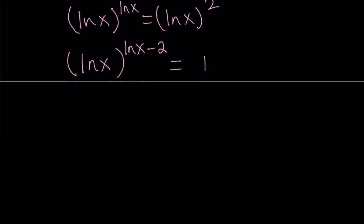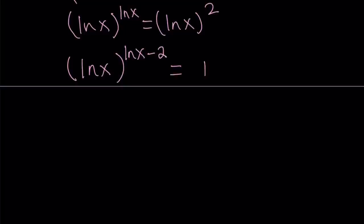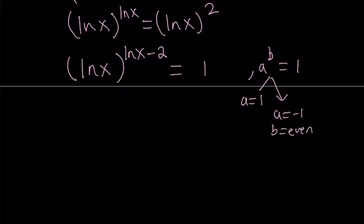From here we get a couple different possibilities. If something to the power of something else is equal to one, as we talked about in a previous video, then you can say three things: a is equal to one and b can be anything; a is equal to negative one and b has to be even; or b is zero but a does not equal zero.